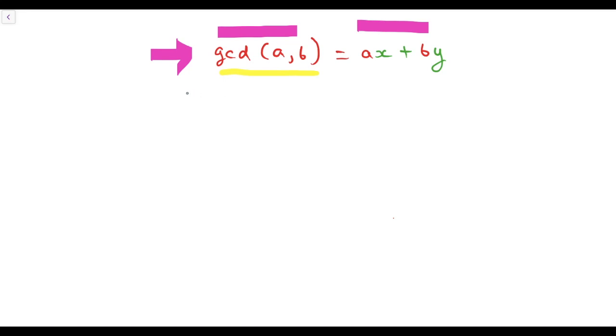From the previous video we saw that GCD of A and B can be written as a linear combination of A and B.